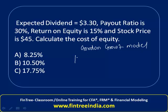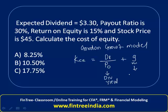The Gordon Growth Model formula states: cost of common equity equals dividend at time 1 divided by price of stock at time 0 — which is the dividend yield — plus the growth rate of the company. The question does not give us a growth rate directly, but it can be calculated.